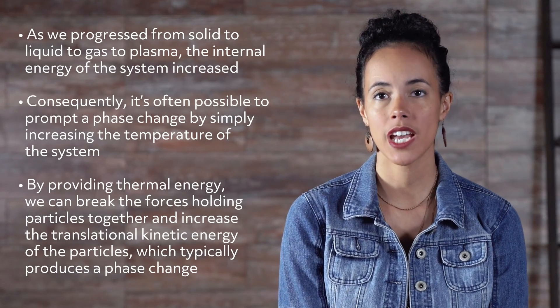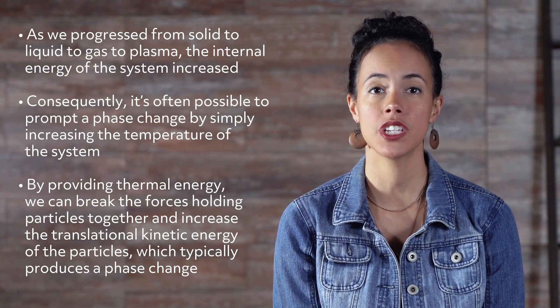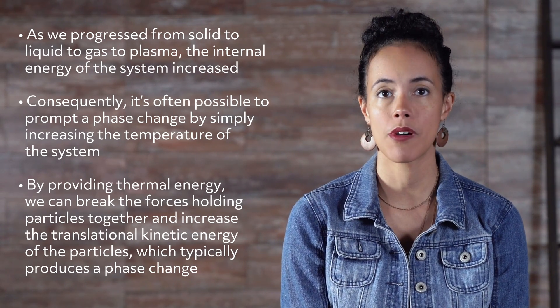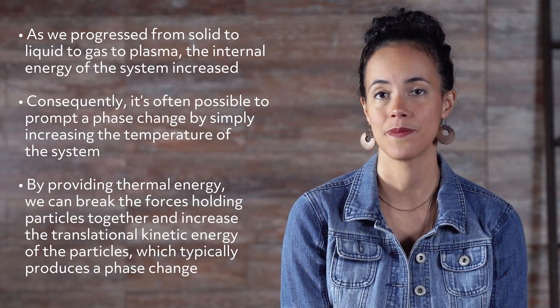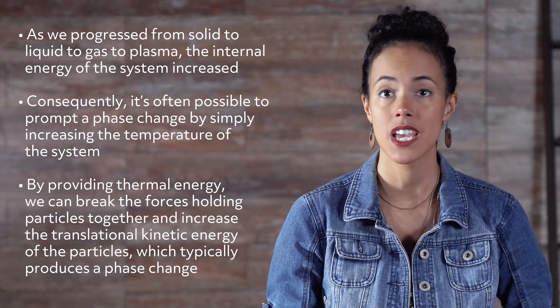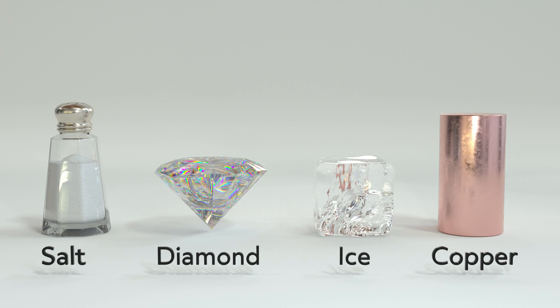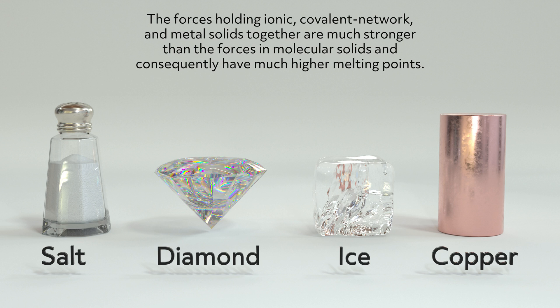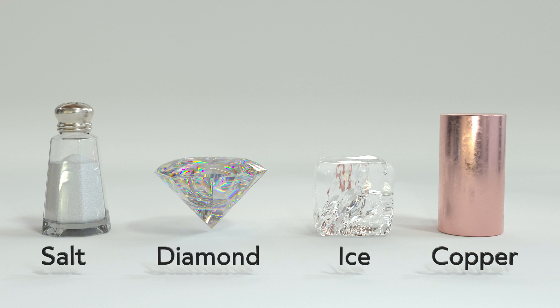Now that we've covered each phase of matter separately, let's consider them together. You'll notice that as we progress from solid to liquid to gas to plasma, the internal energy of the system increased. Consequently, it's often possible to prompt a phase change by simply increasing the temperature of the system. By providing thermal energy, we can break the forces holding particles together and increase the translational kinetic energy of the particles, which typically produces a phase change. The amount of heat necessary to undergo a phase change depends on the type of material. Usually the forces holding ionic, covalent network, and metal solids together are much stronger than the forces in molecular solids and consequently have much higher melting points. For example, sodium chloride and copper melt at 1474°F and 1984°F respectively, versus ice which melts at 32°F.